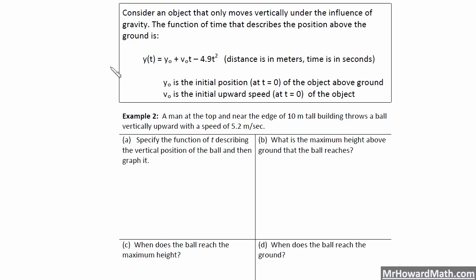If you've taken physics or you are taking physics, you might look at a similar situation in your physics class. Consider an object that only moves vertically under the influence of gravity. The function of time that describes the position above the ground is y(t) = y₀ + v₀t − 4.9t². This is just a quadratic function. You can see it's got a negative squared term, so it's going to open downward.